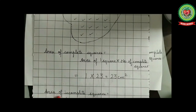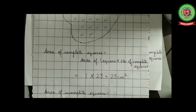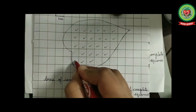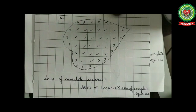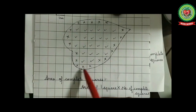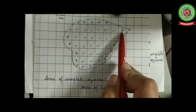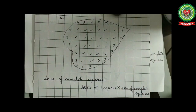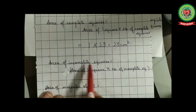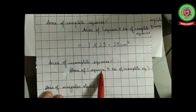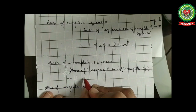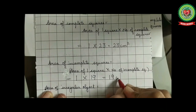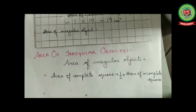Next is the area of incomplete squares. For finding the area of incomplete squares, mark crosses on the incomplete squares. Counting them: 1, 2, 3, 4, 5, 6, 7, 8, 9, 10, 11, 12, 13, 14, 15, 16, 17, 18, 19 — these are 19 in number. The area of incomplete squares is given as: area of 1 square (1 cm²) multiplied by 19 (number of incomplete squares), which equals 19 cm².